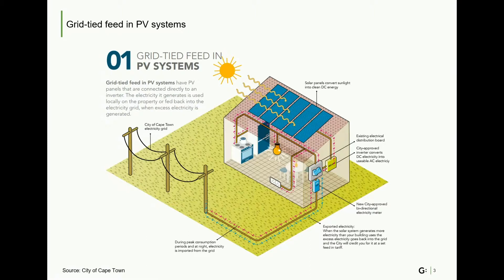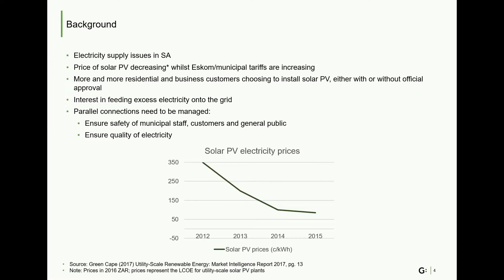This model was developed at an interesting time in South Africa's electricity supply industry history and this context shaped the development of the model. This slide explains the electricity supply issues in South Africa, which were accompanied by increases in electricity tariffs. At the same time, solar PV prices were falling. As a result of tariff increases and solar PV price decreases, more and more electricity customers are choosing to install solar PV, with and without official approval. In addition, there is interest in feeding excess electricity back onto the grid. It is important for municipalities to manage these parallel connections to ensure the safety of staff, customers and the public as well as to ensure the quality of electricity.